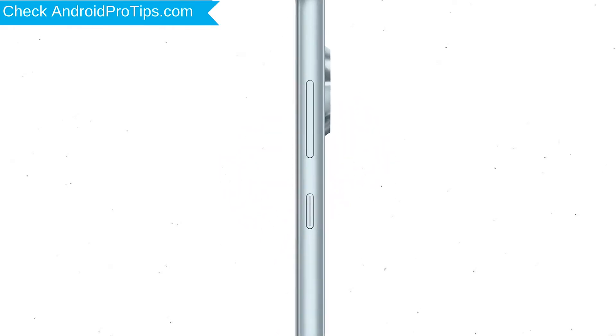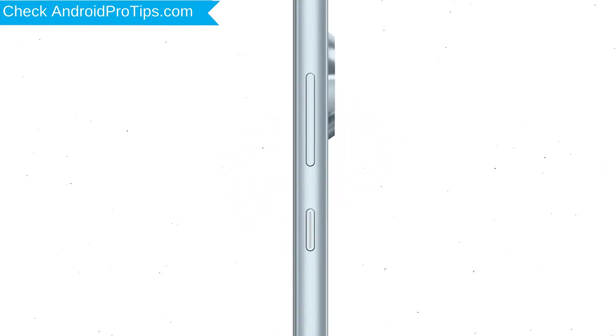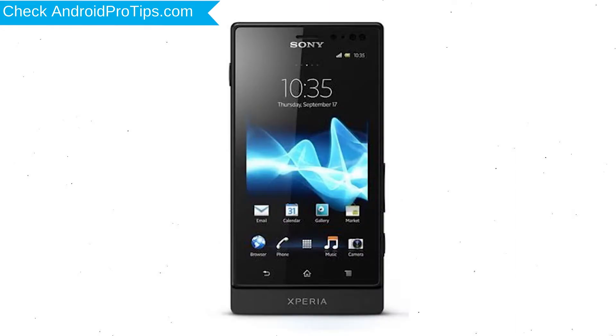Power off your mobile by holding the power button. Next, press and hold the volume down button and power button. When you see the Recovery Mode screen, release all the buttons.